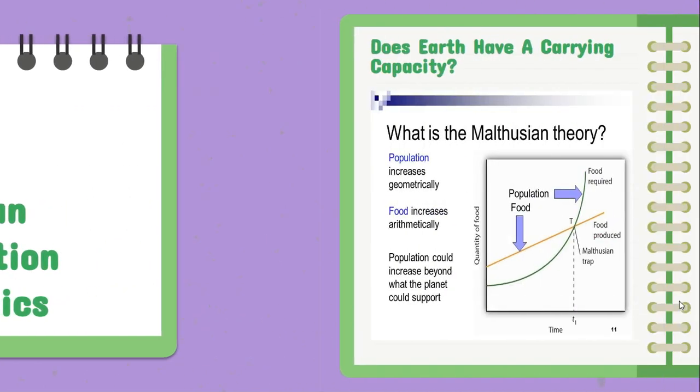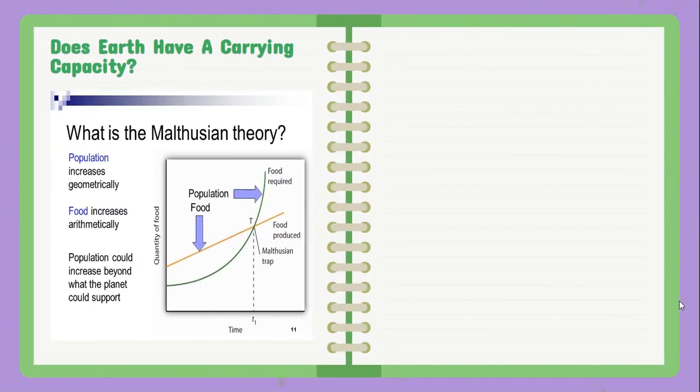Starting off, we've talked now a lot about total fertility rate and age structure diagrams, and we know that the larger the total fertility rate of a country, usually that relates to more population growth. The lower the TFR becomes, the lower the population growth may be, and in some cases some countries may even be declining.